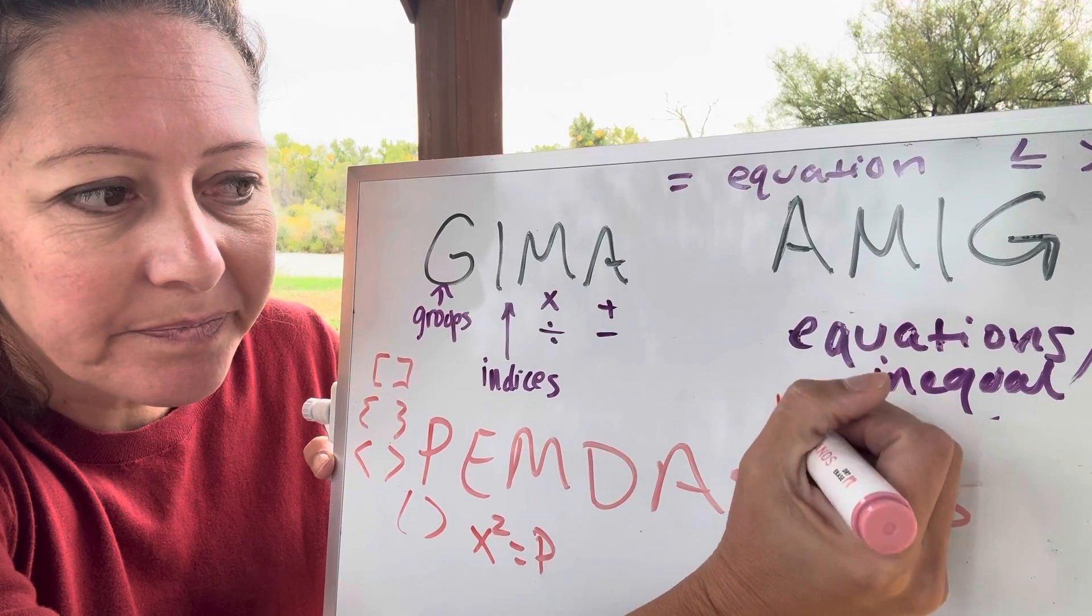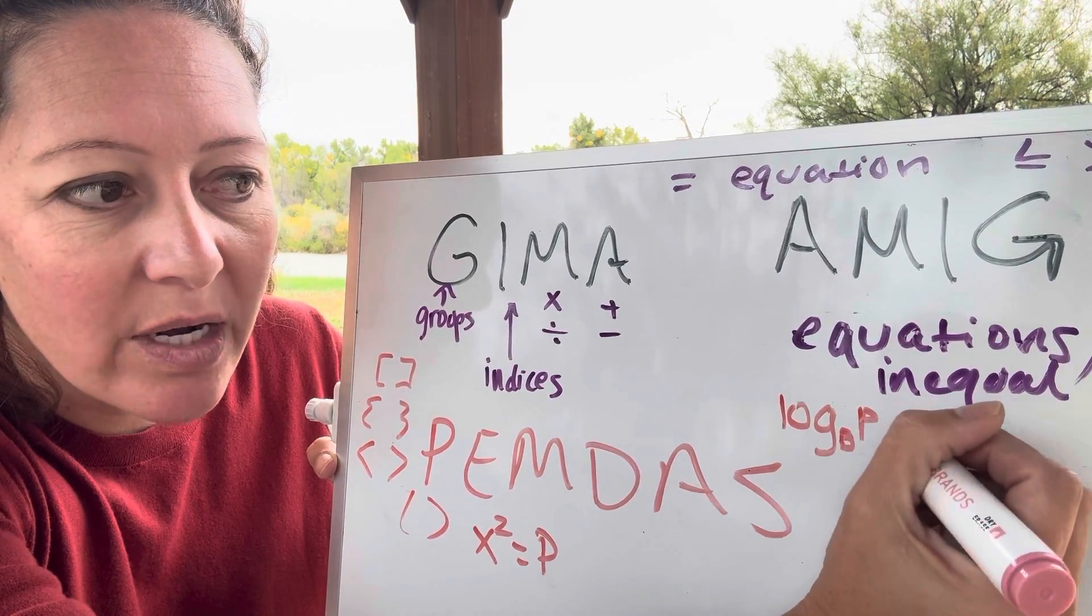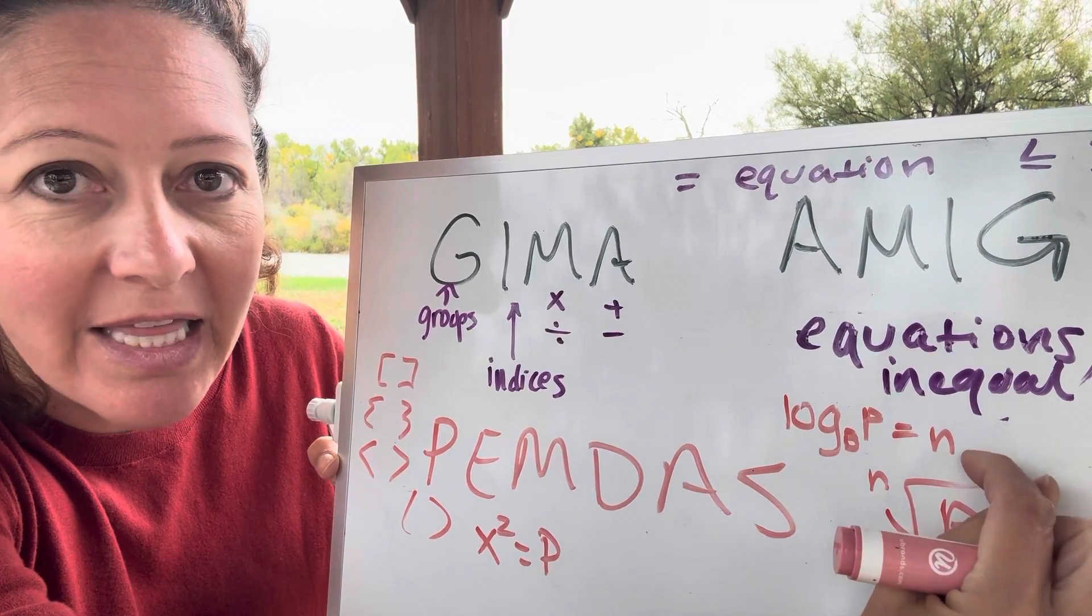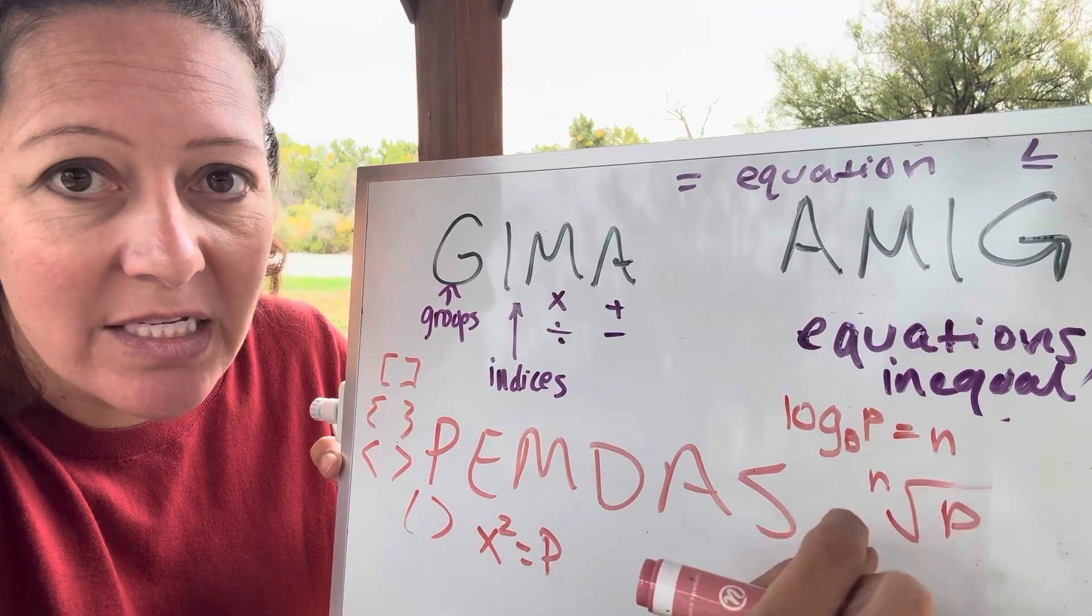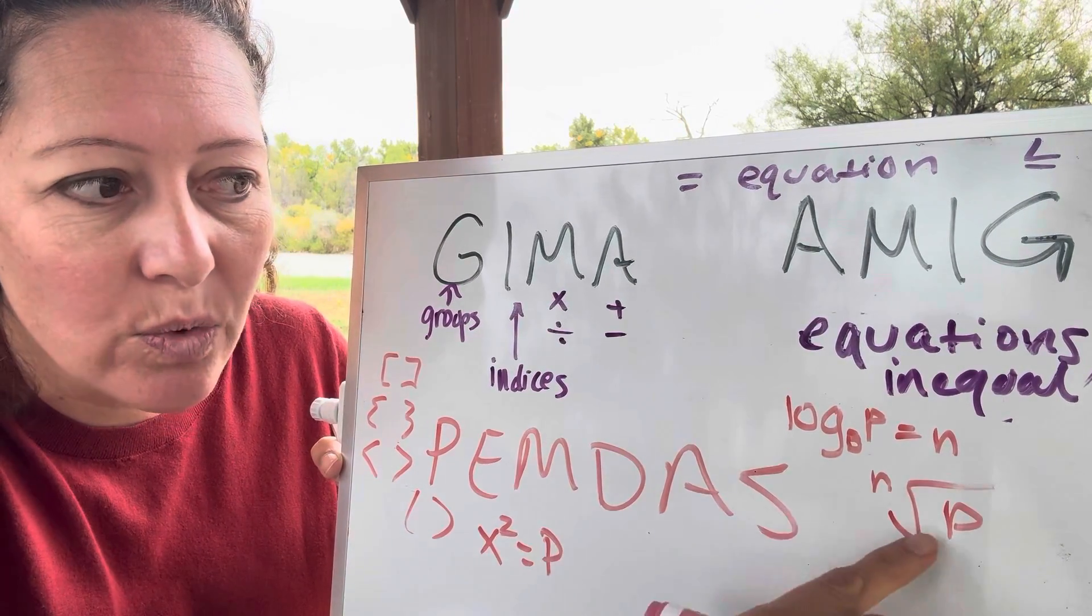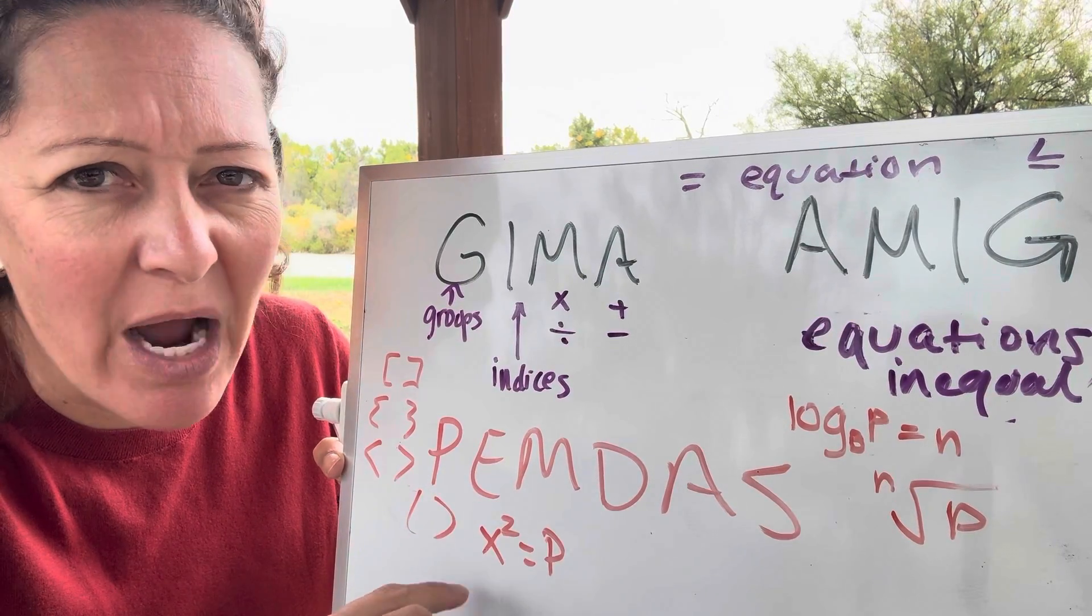We could also have a log where we have a base of a power. And we're solving for the index. And again, in that case, we call that an index. We don't call it an exponent. So index will cover powers, roots, and logs. Versus exponent is just in the case where we're talking about solving for the power.